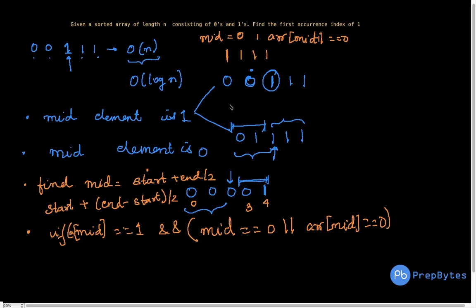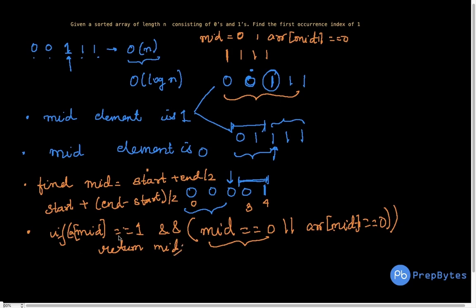So when a[mid] equals 1, before checking a[mid minus 1] equals zero, we first check if mid equals zero. We use an OR condition: if mid equals 0 OR a[mid minus 1] equals 0. Because of short-circuit evaluation with OR, if the first condition is true the second is never evaluated — so we avoid the runtime error. If mid equals zero we don't evaluate a[mid minus 1], and if mid is not zero we check a[mid minus 1] equals zero. If the whole condition is true, we return mid.